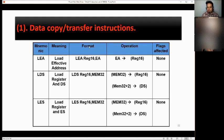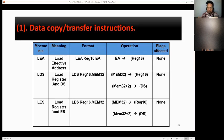We have LEA — load effective address. The format is LEA REG16, EA. Operation: load the effective address of EA to the 16-bit register. Next, LDS — load register and DS. Format: LDS REG16, MEM32. Operation: load MEM32 to the 16-bit register; when using DS, load MEM32+2 to DS. Similarly, LES — load register and ES — same as LDS. Load LES REG16, MEM32; load MEM32+2 to ES.